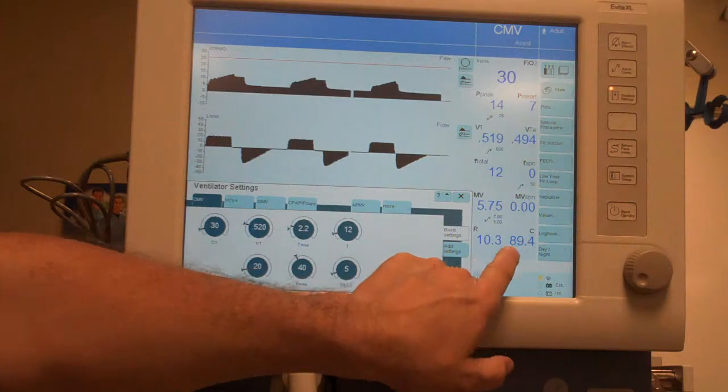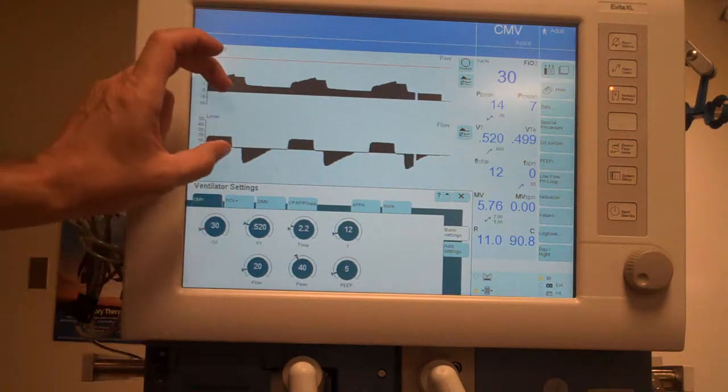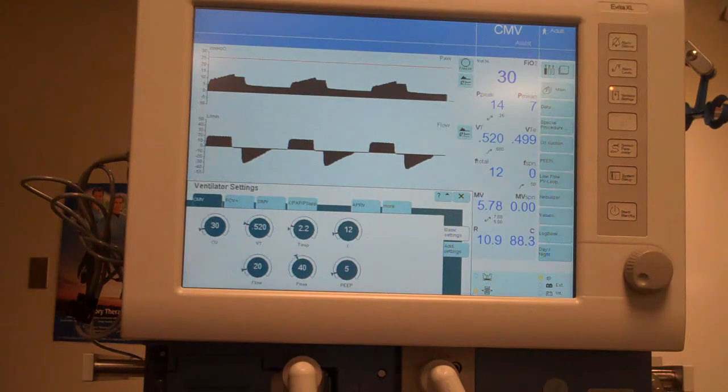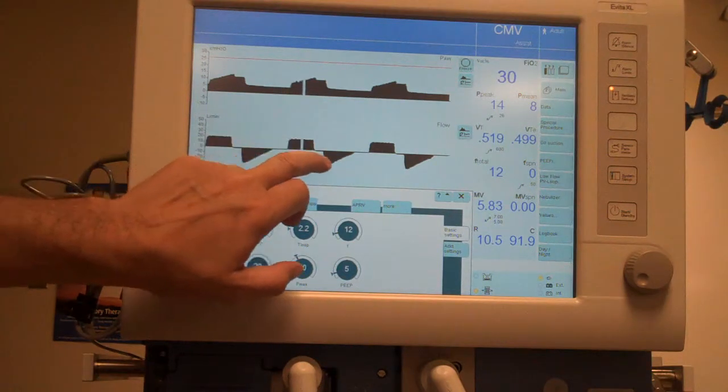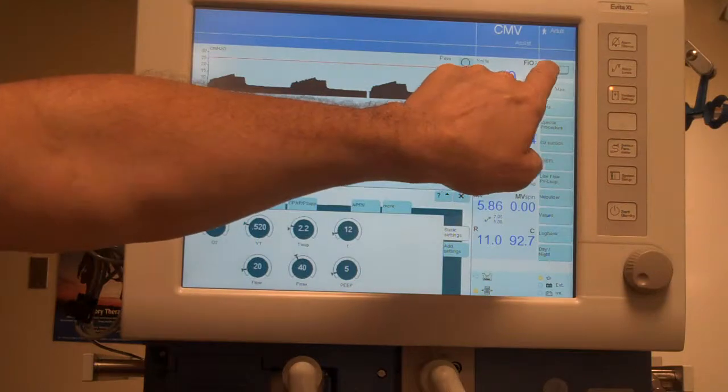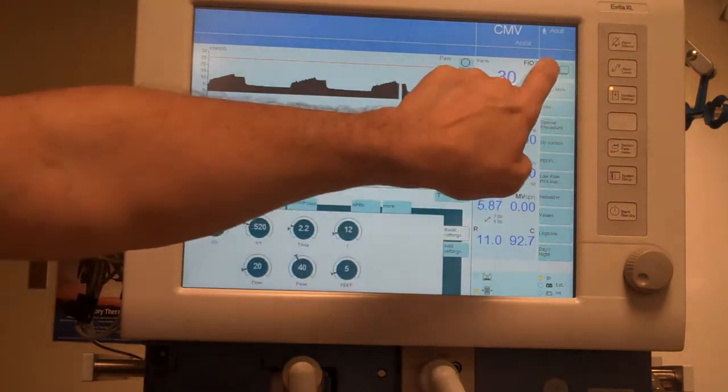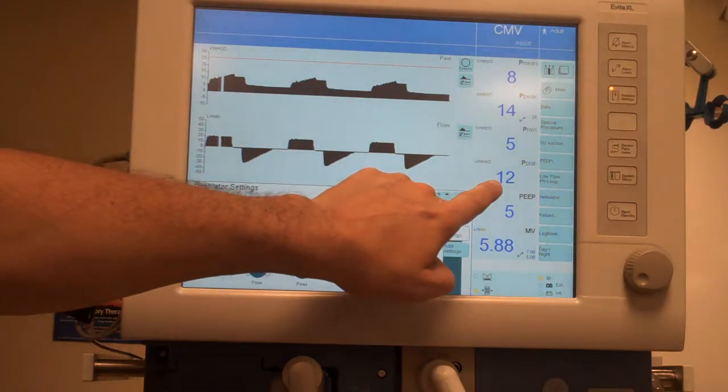Now you will notice that it does measure static compliance and airway resistance, and you can utilize those numbers so long as you have that plateau present. And those numbers will be valid. The square wave flow pattern will give us the resistance and the plateau period.